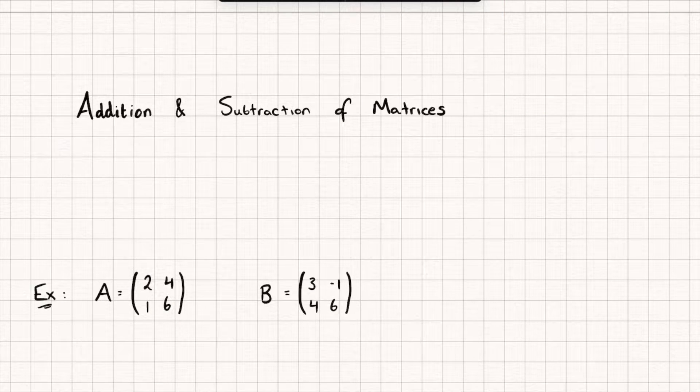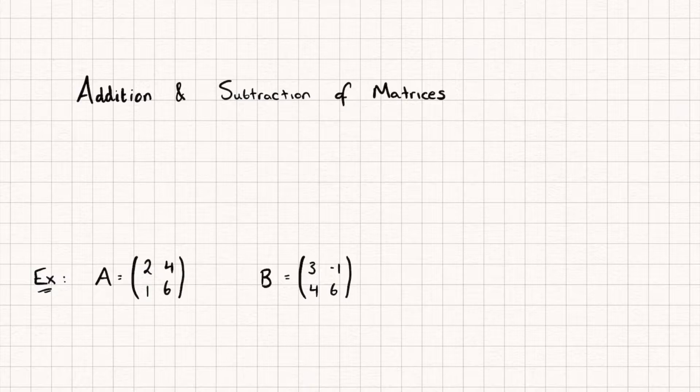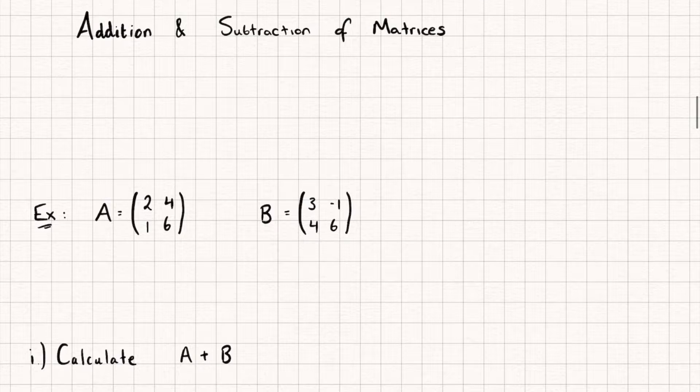So the idea of matrix addition and subtraction is actually very similar to vector addition and subtraction. The only rule is that the dimensions of our matrices must be the same. So you can see here we have two matrices, A and B, and they're both 2×2 matrices, meaning they both have two rows and two columns.